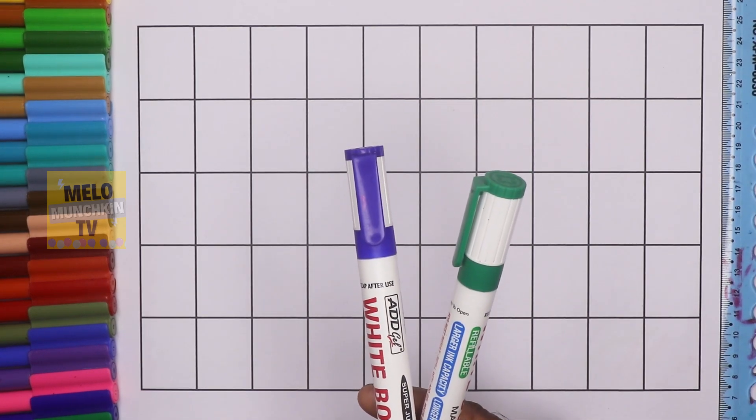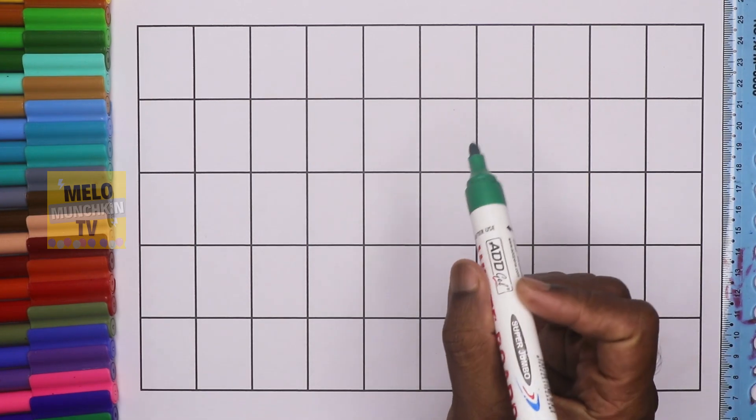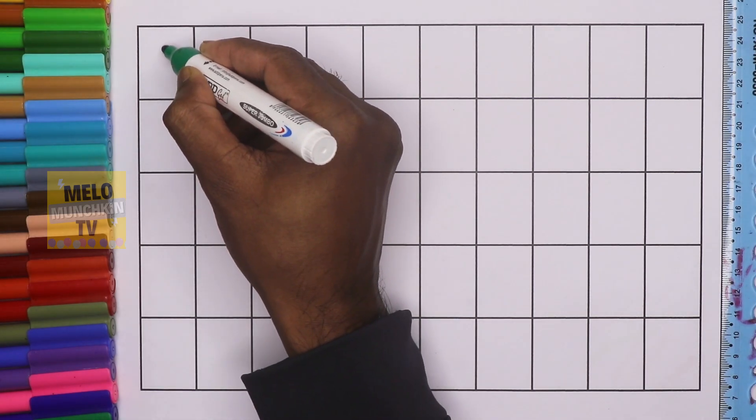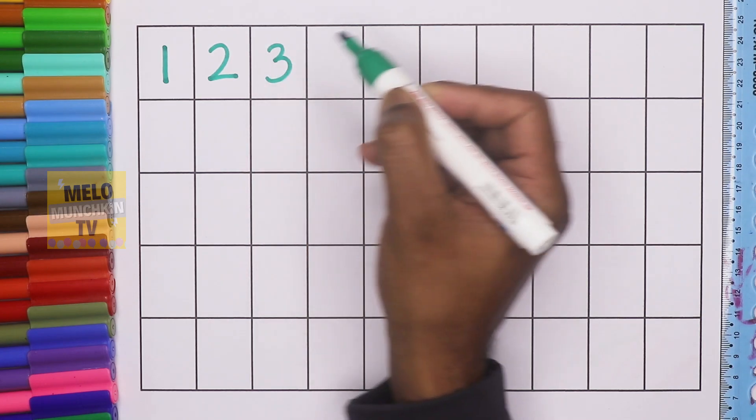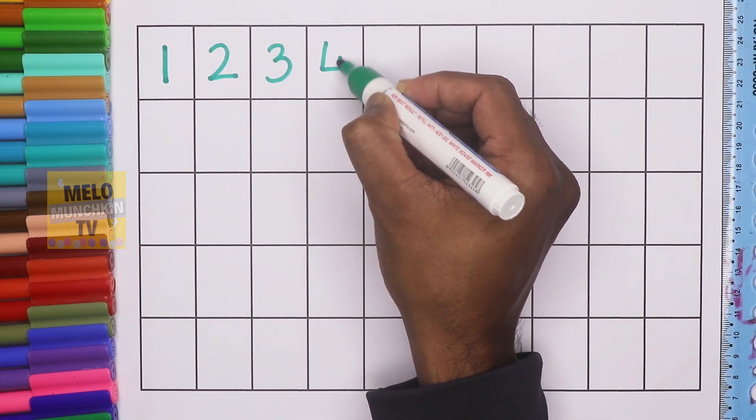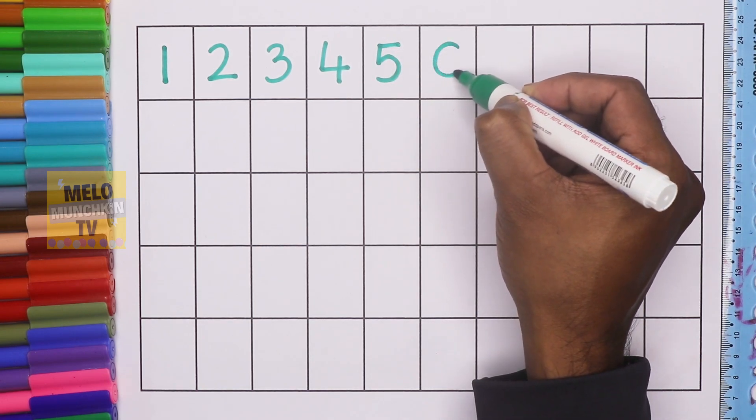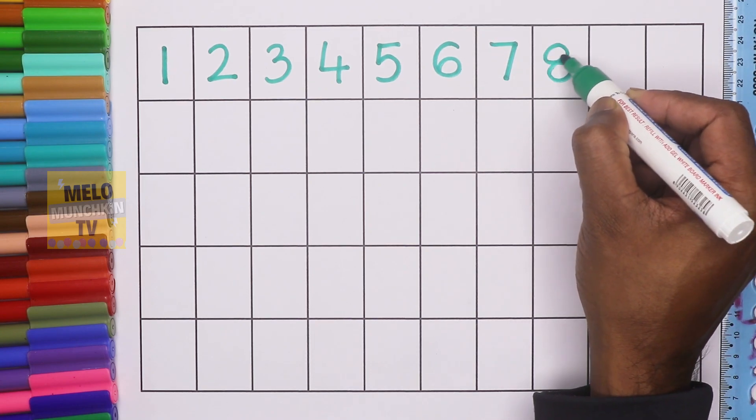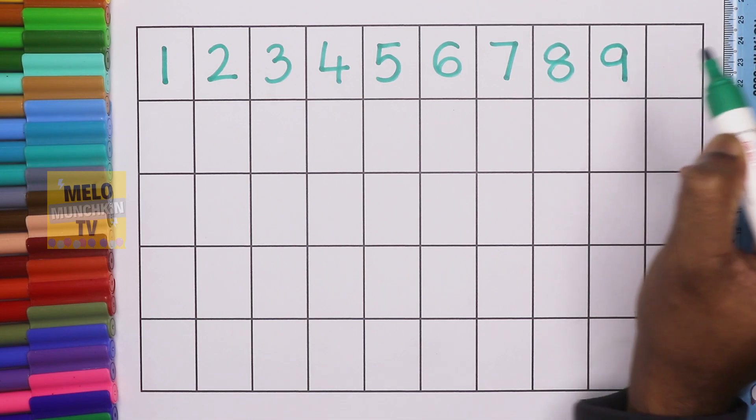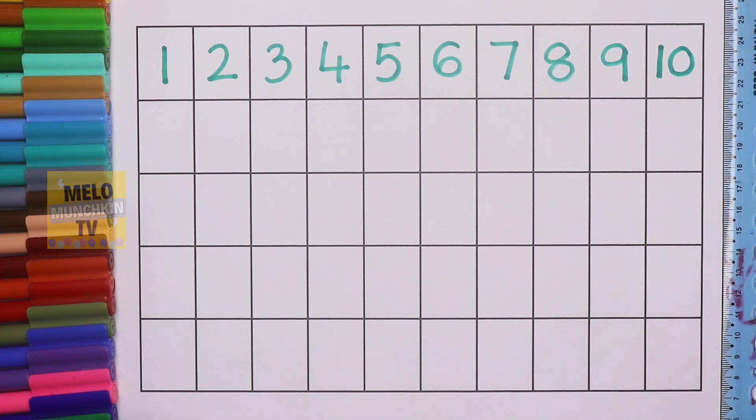Okay, so let's get started. Green color: one, two, three, four, five, six, seven, eight, nine, ten. Now I'll take blue color.